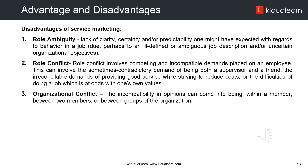Disadvantages of service marketing. Role ambiguity: lack of clarity, certainty, or predictability one might have expected with regards to behavior in a job, due to an ill-defined or ambiguous job description or uncertain organizational objectives. Role conflict: role conflict involves competing and incompatible demands placed on an employee — this can involve the contradictory demand of being both a supervisor and a friend, the irreconcilable demands of providing good service while striving to reduce costs, or the difficulties of doing a job which is at odds with one's own values. Organizational conflict: incompatibility in opinions can arise within a member, between two members, or between groups of the organization.